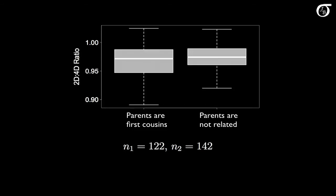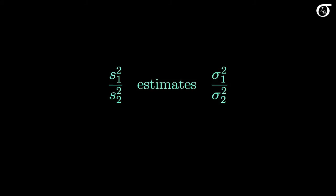If we use our usual sample variance formula on the raw data, we'd find that the sample variance for the related parents group is 0.00072, and the sample variance for the unrelated parents group is 0.00038. The ratio of sample variances, s1 squared over s2 squared, estimates the ratio of population variances, sigma 1 squared over sigma 2 squared. We deal with the ratio of variances, and not the difference between the variances, for a couple of reasons. First, under certain conditions like normality, the ratio of sample variances has a nice clean distribution that we'll discuss in a moment. Very often ratios of statistics have ugly distributions that are not easy to deal with, but under normality the ratio of sample variances is easy to work with.